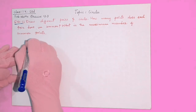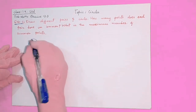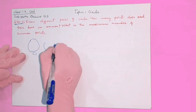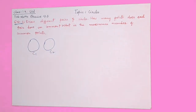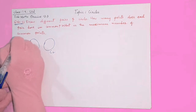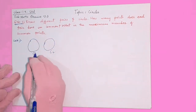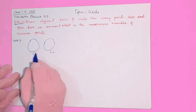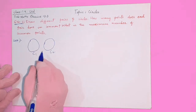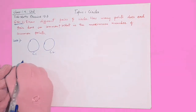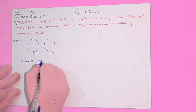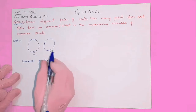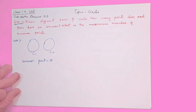Case one: I am drawing two circles like this — C1 and C2 — which are not intersecting at any point. The number of common points here is zero, because they are not intersecting and not having any common point.